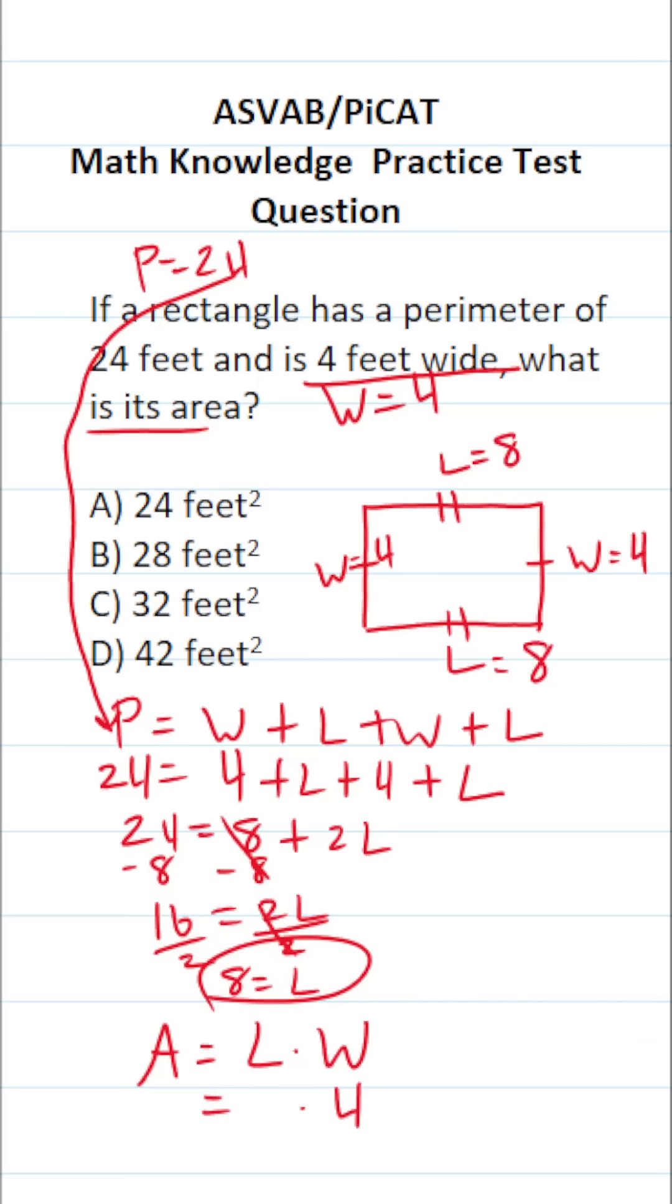Again, to find the area of a rectangle, it's length times width. We know our width is 4 and our length is 8. So this becomes 8 times 4, which is going to be 32. So in other words, the area of this rectangle is C, 32 square feet.